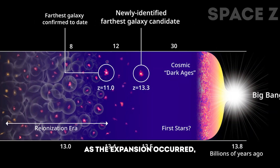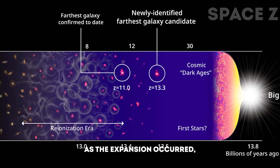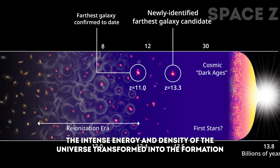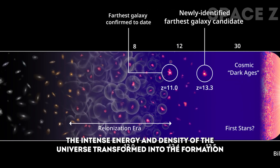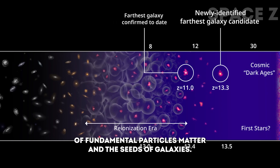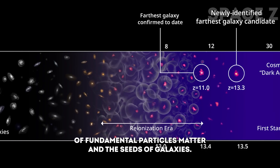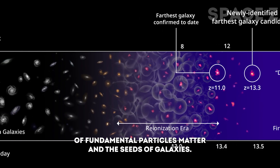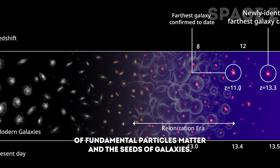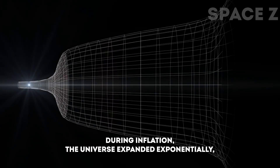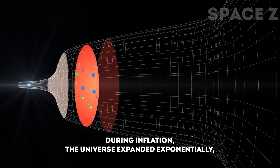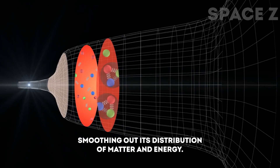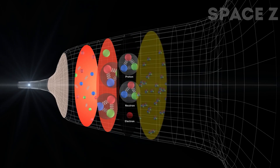As the expansion occurred, the intense energy and density of the universe transformed into the formation of fundamental particles, matter, and the seeds of galaxies. During inflation, the universe expanded exponentially, smoothing out its distribution of matter and energy.